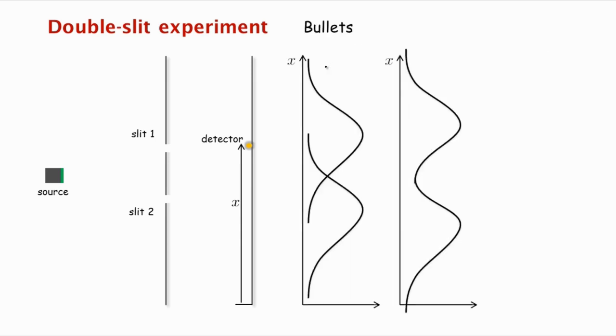So let's perform the experiment with bullets. So let's assume that our source now is a machine gun. Now we'll assume that this machine gun is somewhat unsteady, so the bullets come out in some sort of an arc, so they randomly get fired in these directions.